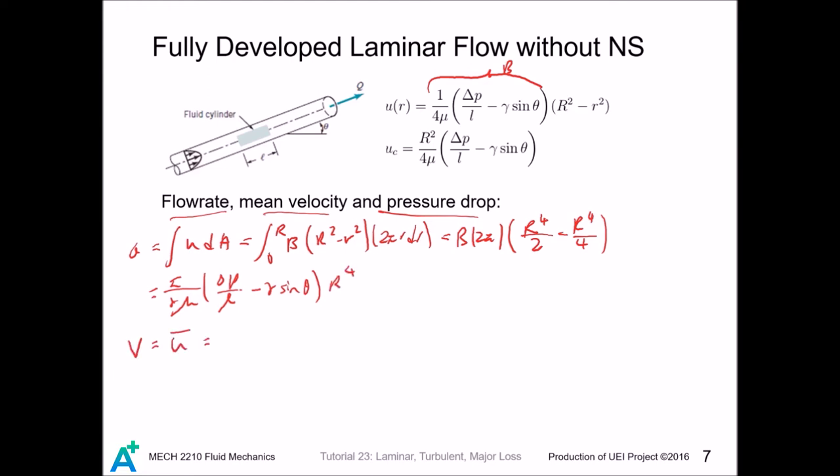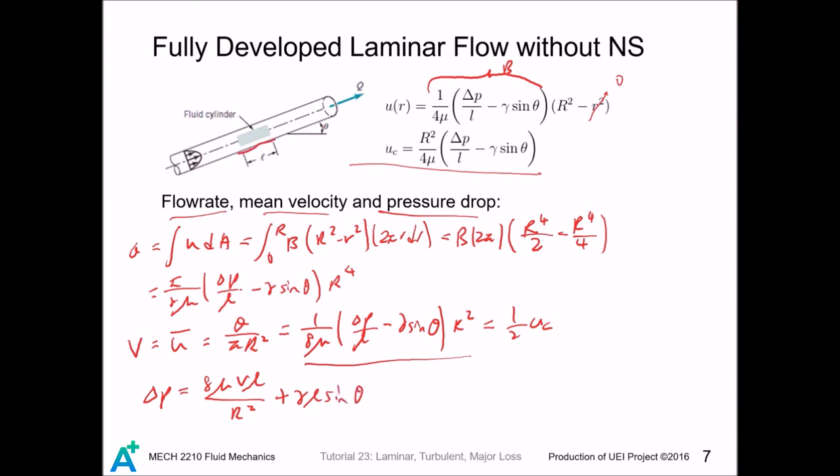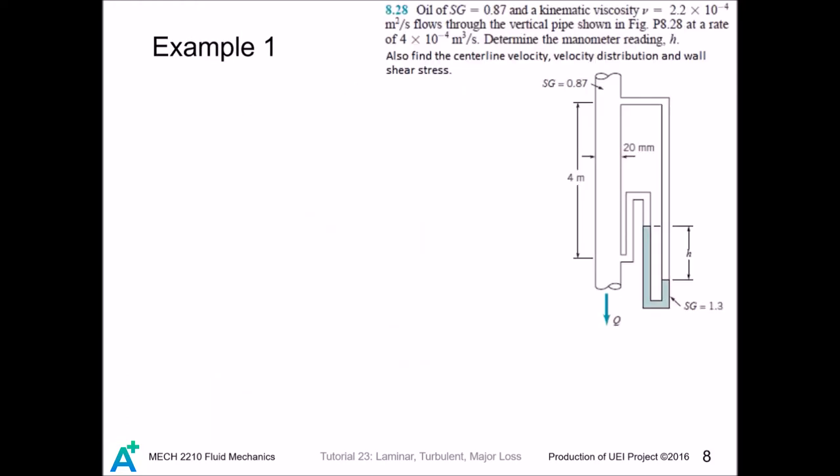So we can solve for the mean velocity, the centerline velocity. The centerline velocity here is just found by taking r as 0 and the centerline velocity is the maximum velocity we can get. With this expression, we can solve for the pressure drop. Since L is this length, L sin θ is just the height here. So we can express this as...